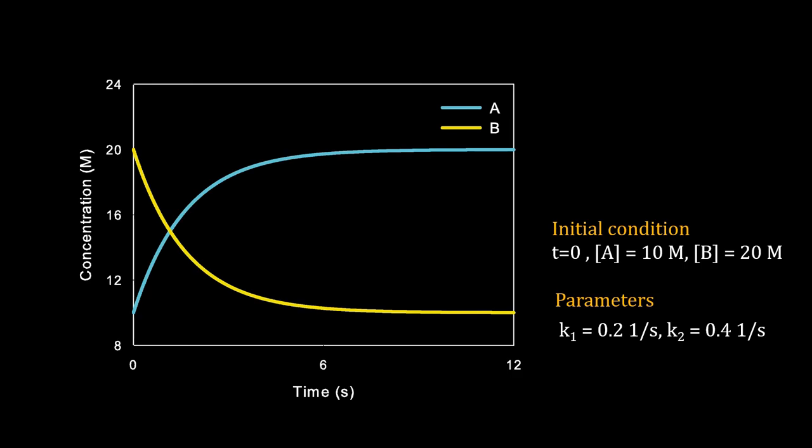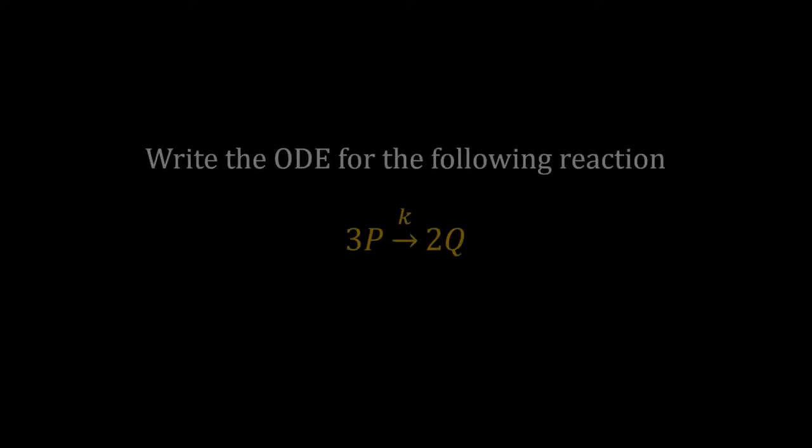This graph shows the data generated by JSim. With time, A increases but B decreases. Eventually both of those flattened. Here is a quick question for you: write the ODE for the rate of this particular equation using the law of mass action.